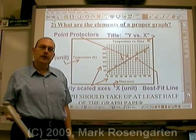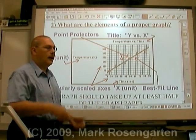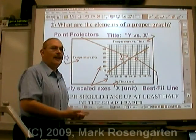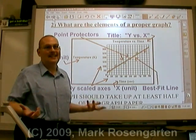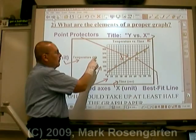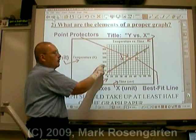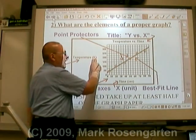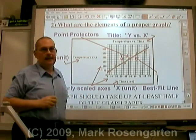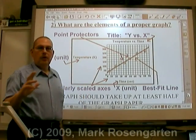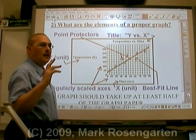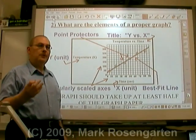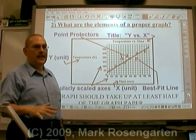Also notice that each of the variables has a unit after it, so we know exactly what these numbers are representing. There are many different ways of measuring temperature — degrees Celsius, degrees Fahrenheit, Kelvin, or even the Rankine scale. The unit tells us which scale we're using. So make sure you have units after each of your axis labels. The last thing you need is a line or curve that best represents the best fit of your data.